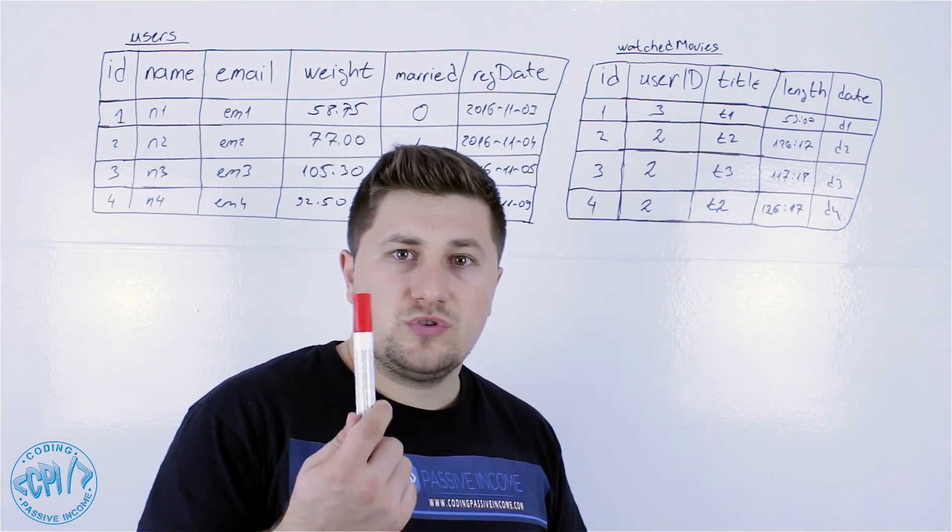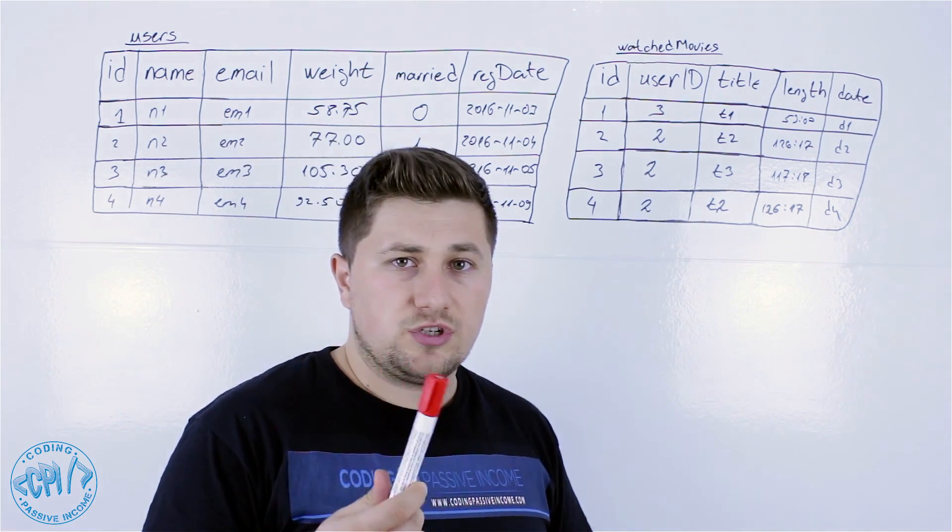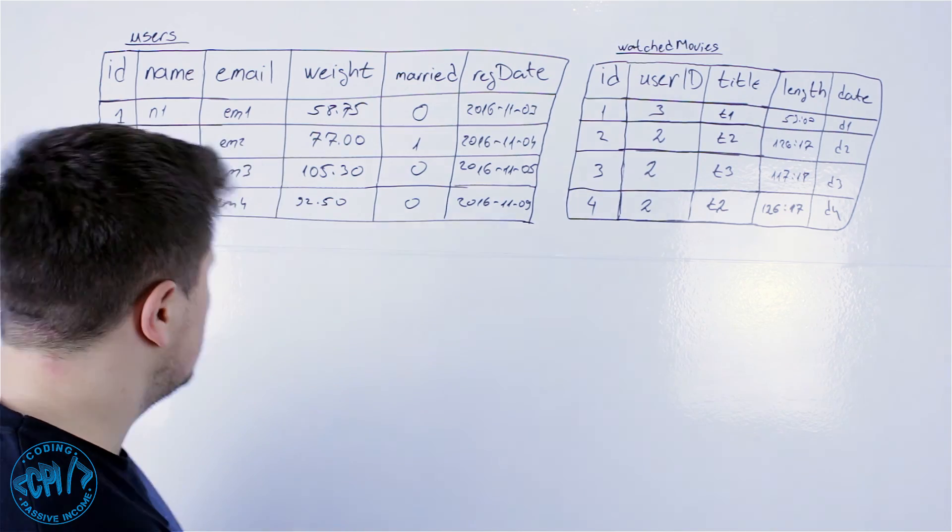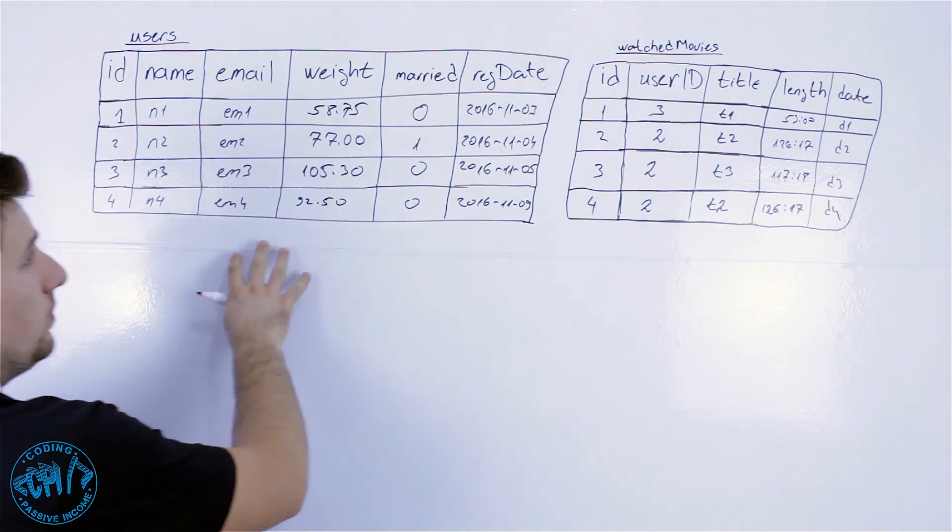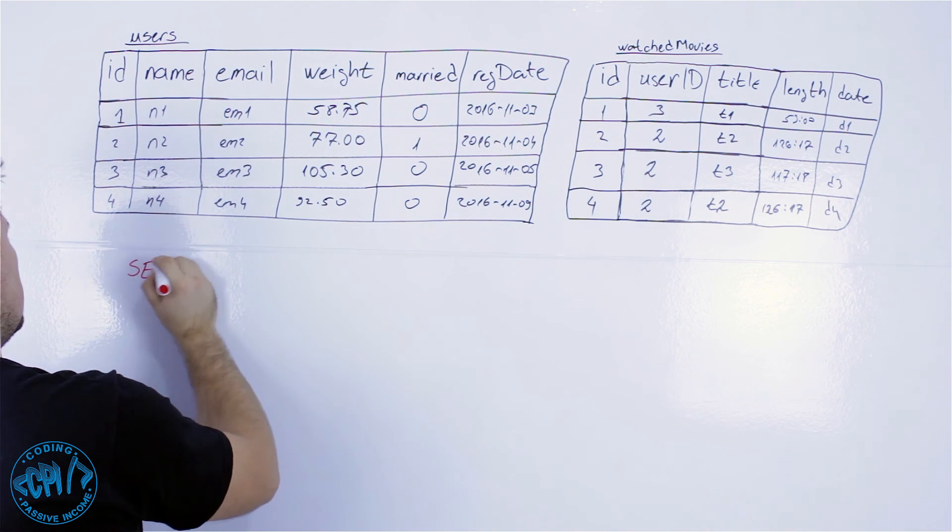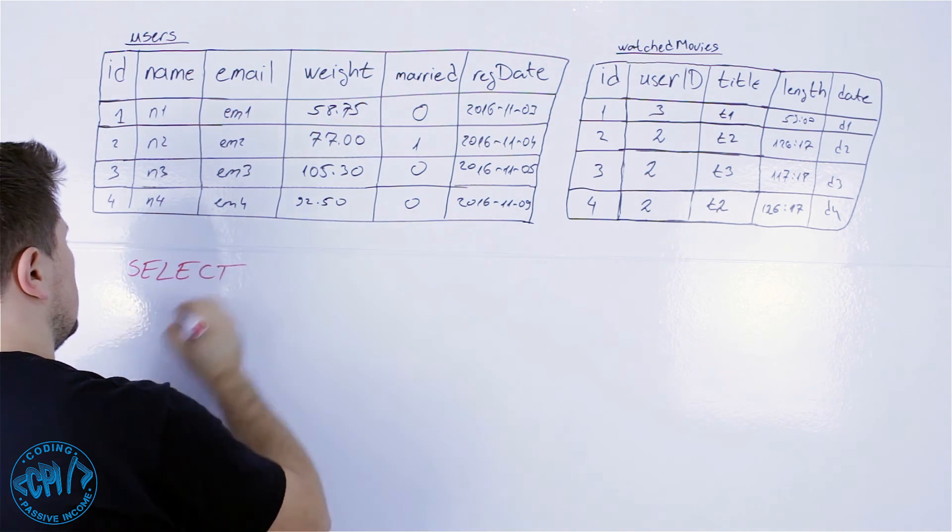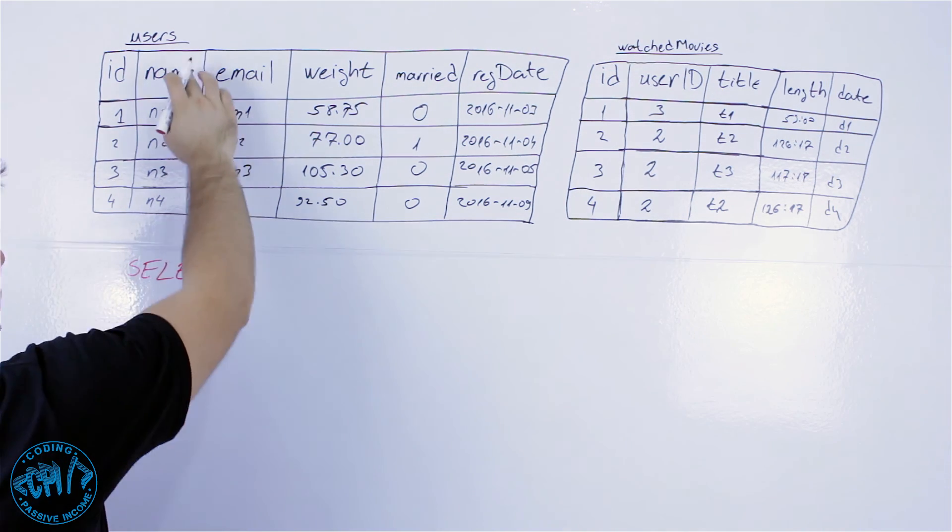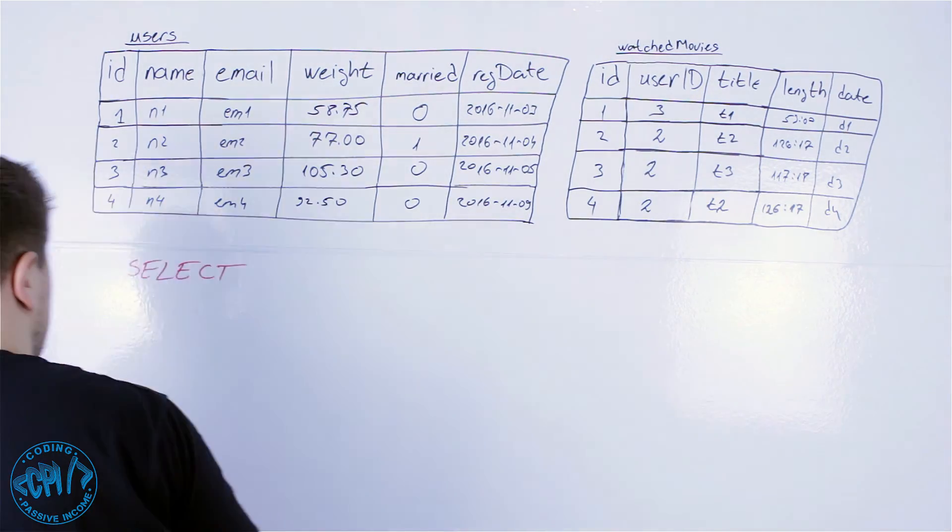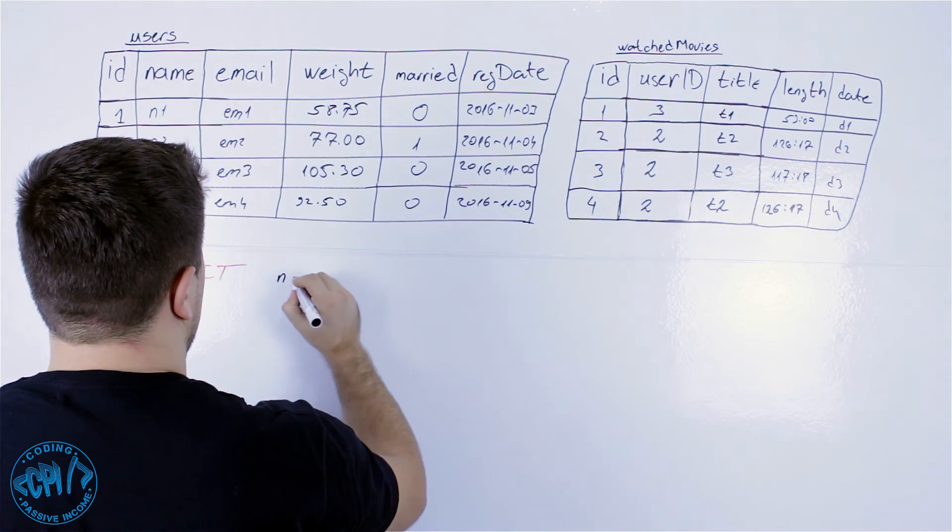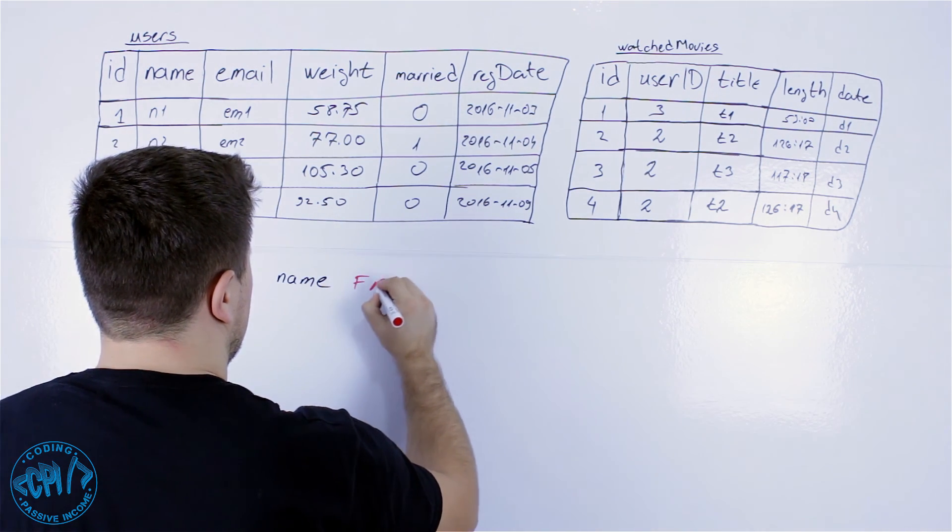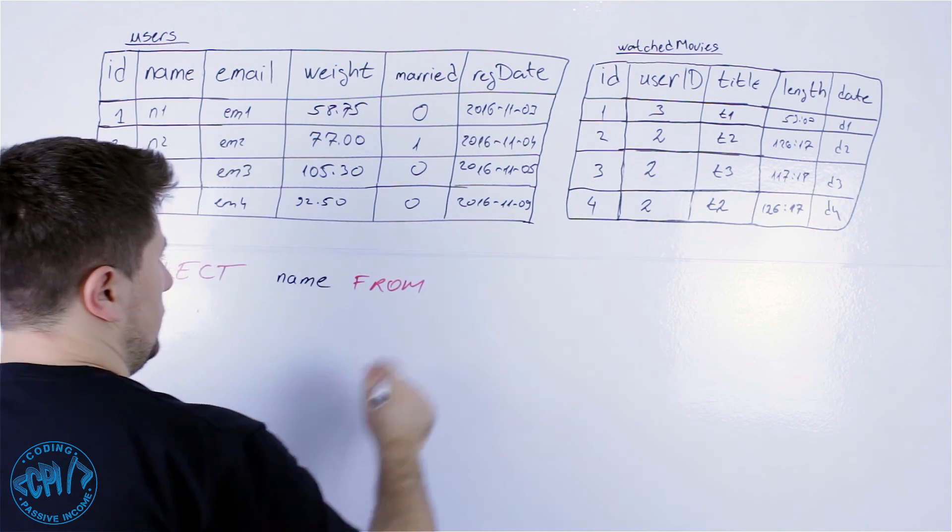Like always I do, I will use red marker for the SQL which is always the same and black marker for something that changes depending on your tables. So we can do it by writing the query SELECT, and now what we want to select, let's say select name from users.